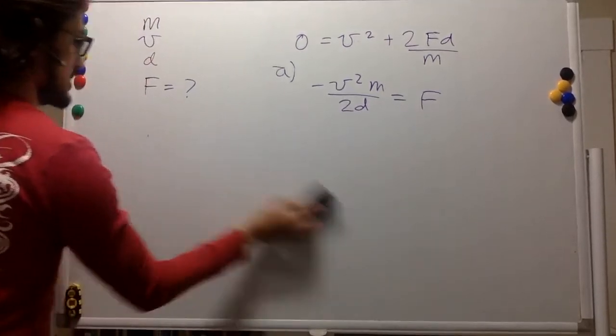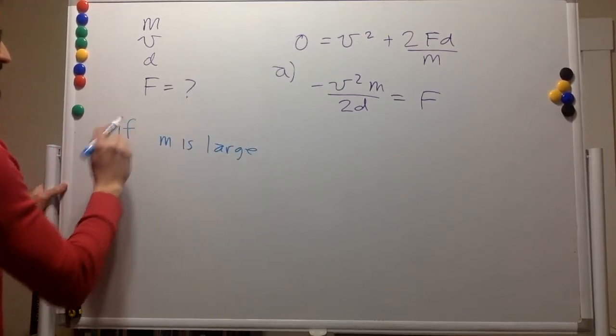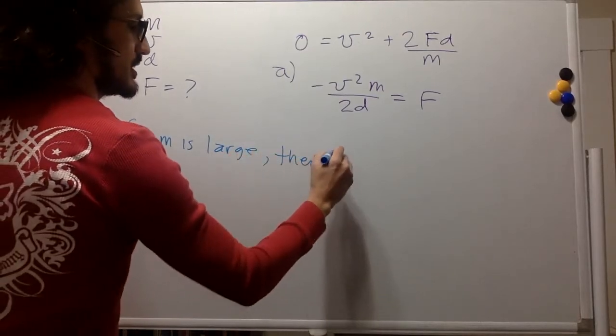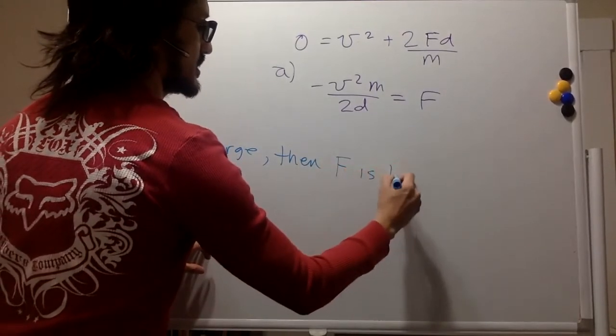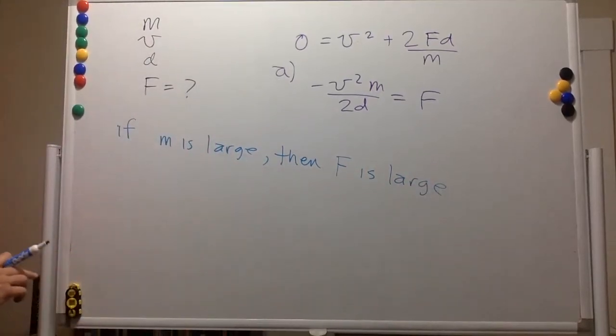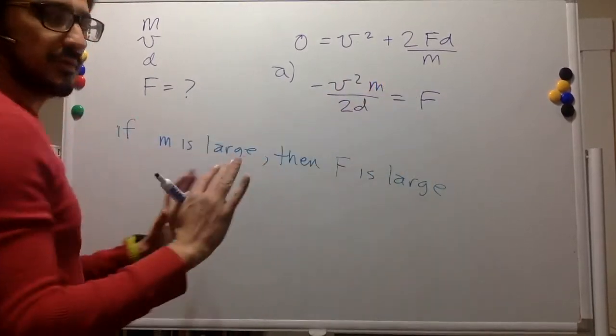For the mass, if the mass is large, then the force, all things being equal, the force is large. And that's because if you have a larger mass, then the inertia is larger and you need a bigger force to stop it. Imagine when someone throws a rubber ball. Like if you throw a rock that is pretty massive, then the force that you feel stopping it is pretty large.